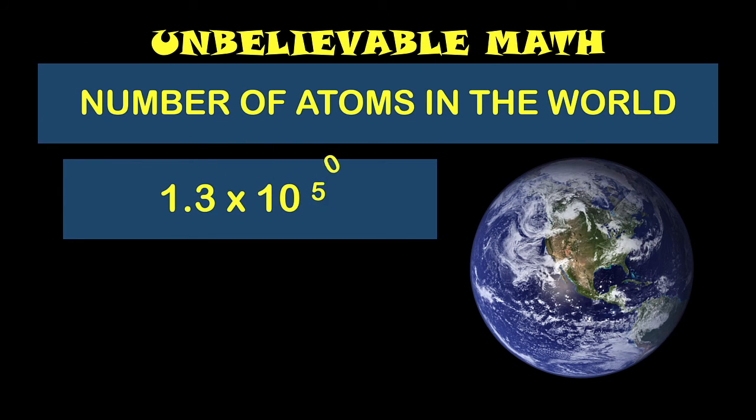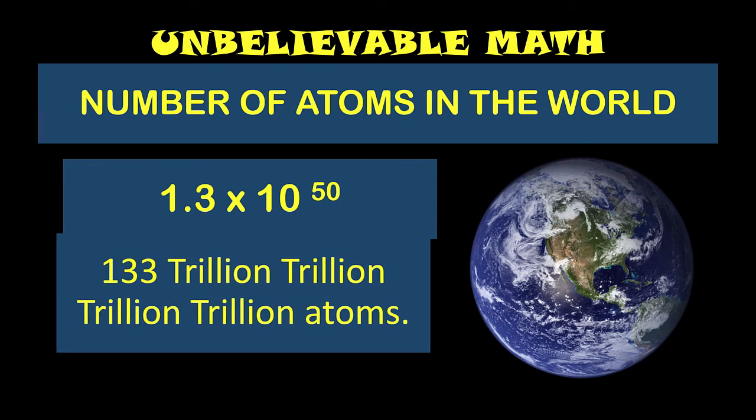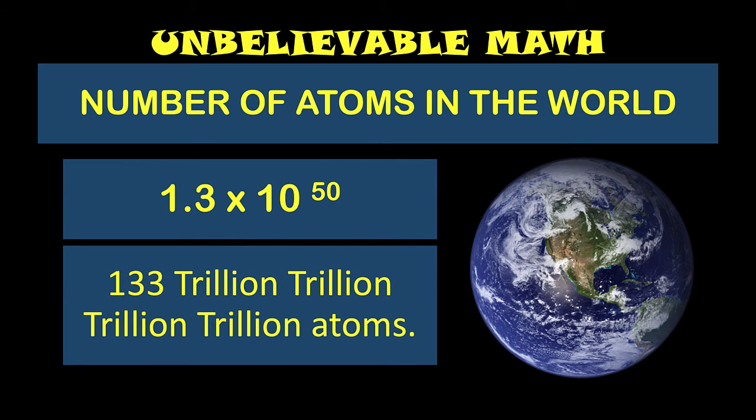Or in other words, 133 trillion trillion trillion trillion atoms. So the estimated number of atoms is 1.3 × 10^50, or 133 trillion trillion trillion trillion atoms. I will put in the description the link on how scientists came up with this approximation.